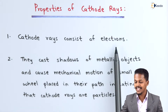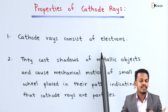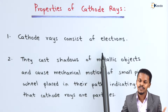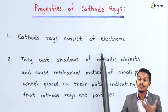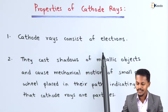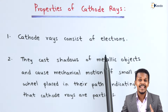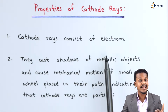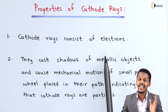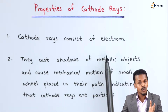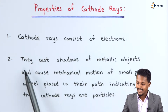The first property is that cathode rays consist of electrons — this is what we covered in the previous topic. Cathode rays are made up of electrons and they travel in a straight path, that is from cathode to anode.